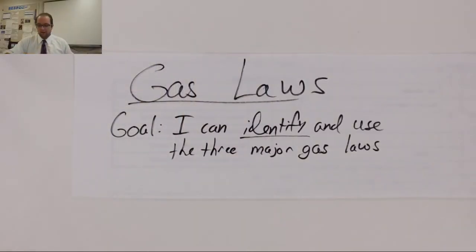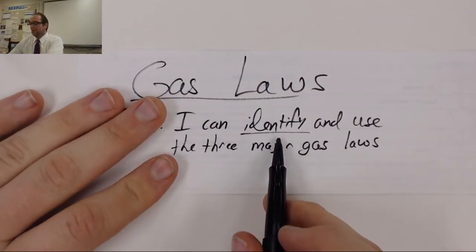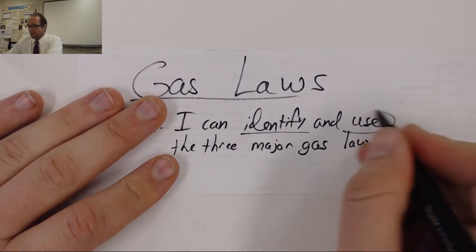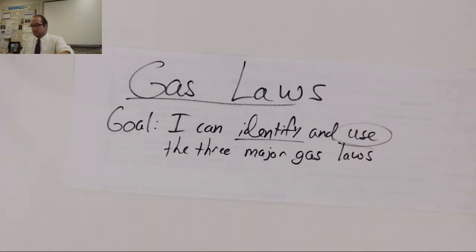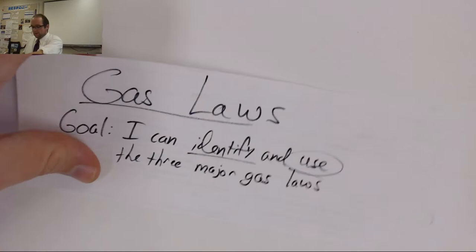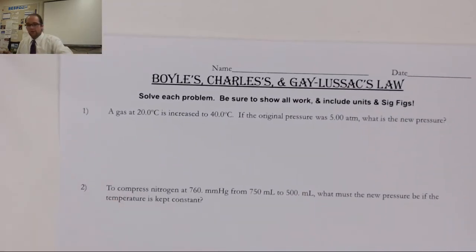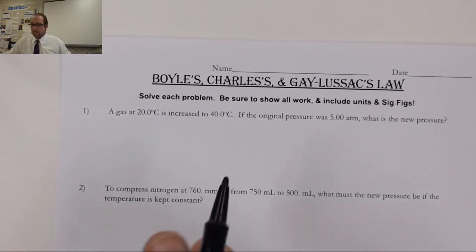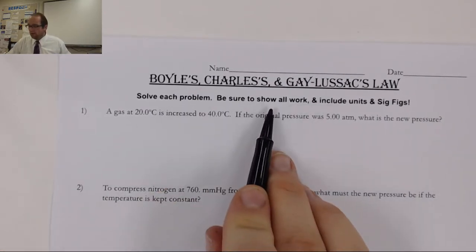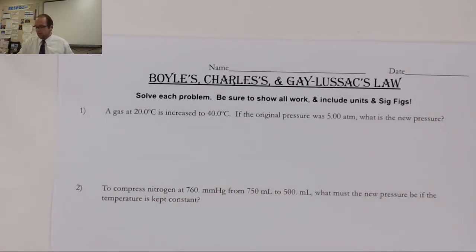Hey there, Hampshire Chemistry. Welcome back to the second video for our gas laws. We are going to be taking a look at continuing our goal of identifying, which we saw in the last video, but now we're going to be talking about using some of our gas laws in various different problems. If you take a look at Haiku, you can see our Boyle's-Charles-Gay-Lussac law sheet. We're going to be solving each problem, showing all our work, and making sure to be careful with our sig figs at the very end. So, let's take a look at some examples.